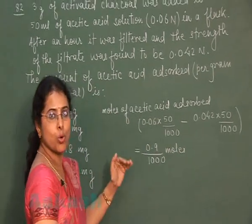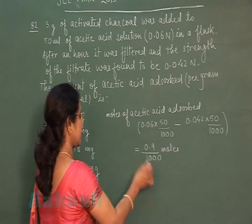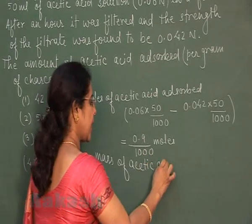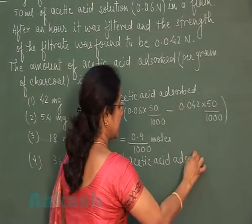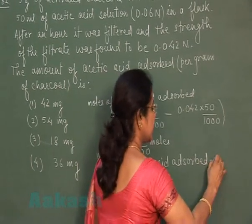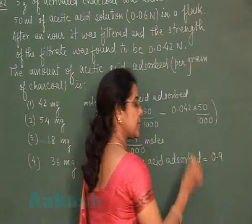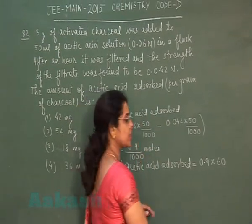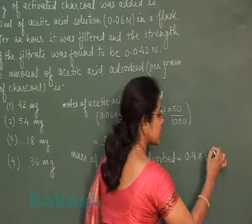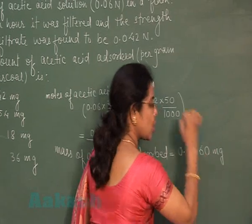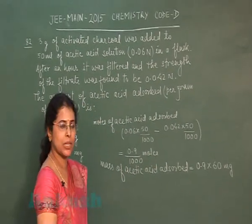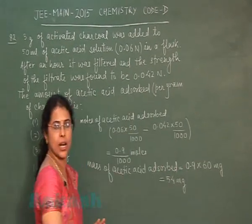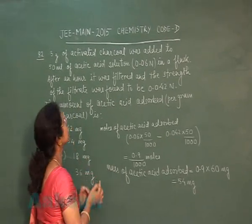Converting the moles of acetic acid adsorbed to mass: mass of acetic acid adsorbed equals 0.9 multiplied by the molecular mass. Multiplying moles by molecular mass and dividing by 1000 gives the value in milligrams. This equals 54 milligrams.